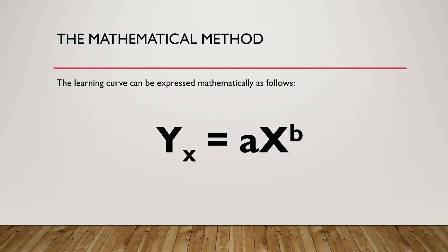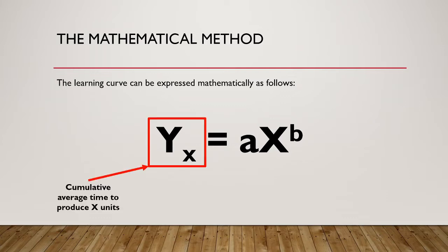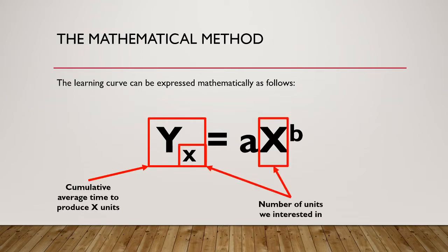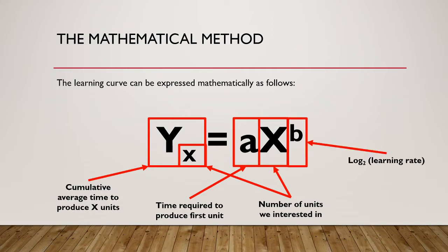The mathematical model expresses the learning curve in the format of yx = ax to the power of b. Here, yx represents the cumulative average time to produce x number of units, where x is the number of units or batches we are interested in. A represents the time required to produce the first unit. Finally, b represents the log of the learning rate to the base of 2.